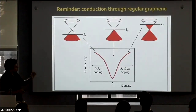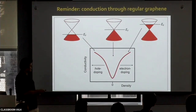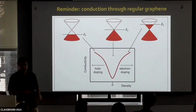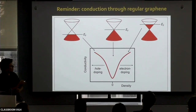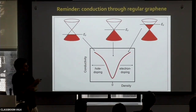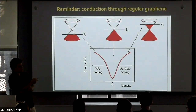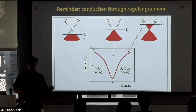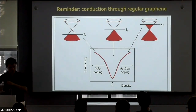Let me remind you how conduction through graphene looks. If you measure the conductivity of graphene as a function of density or Fermi energy: if your Fermi energy is deep in the valence band you have lots of holes and conduct very well; deep in the conduction band you have lots of electrons and conduct very well; at the charge neutrality point or Dirac point you have very few charge carriers so you conduct poorly. The conductivity of graphene versus density looks V-shaped — seen by thousands of groups around the world.